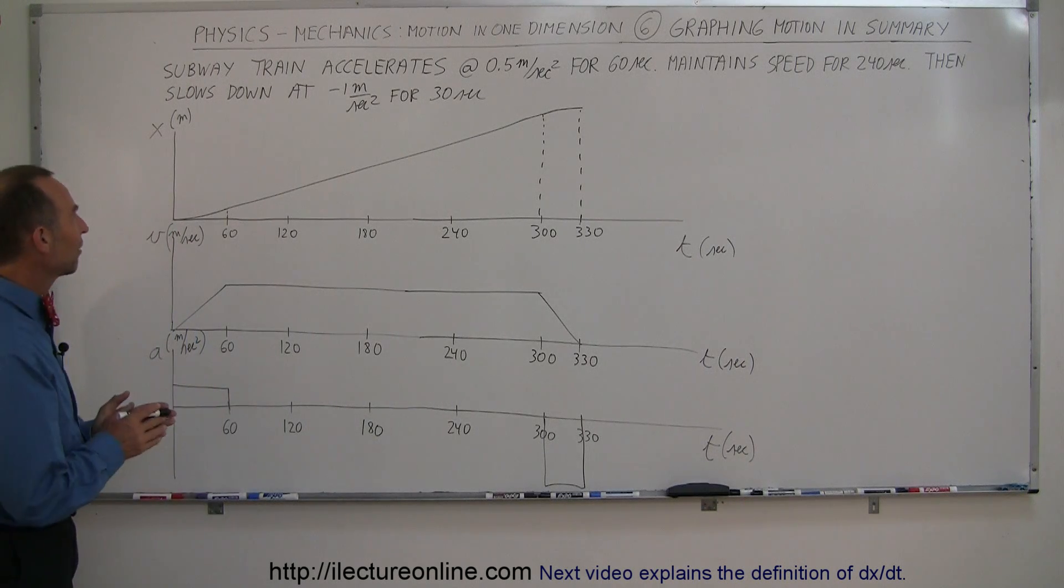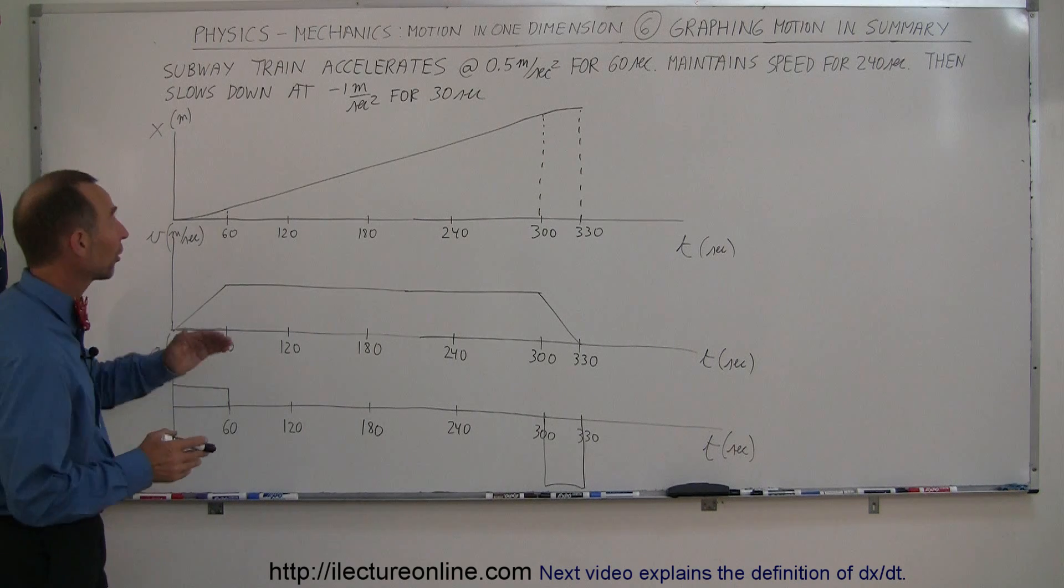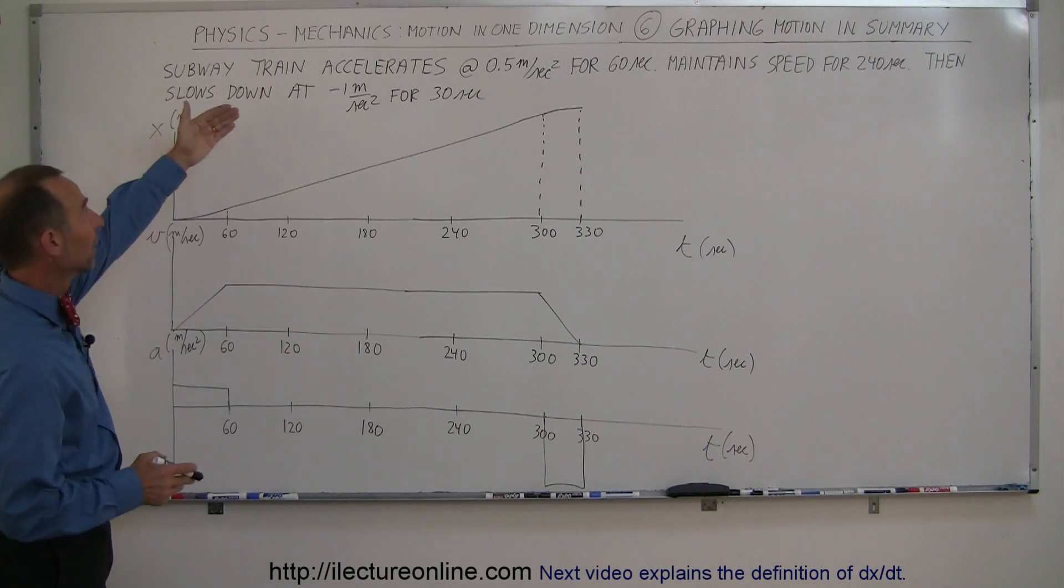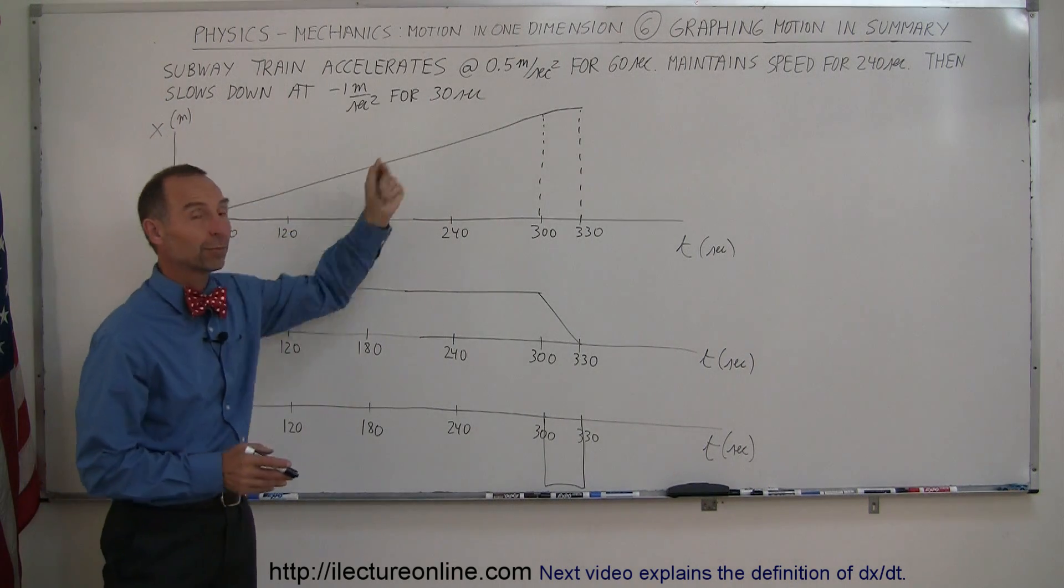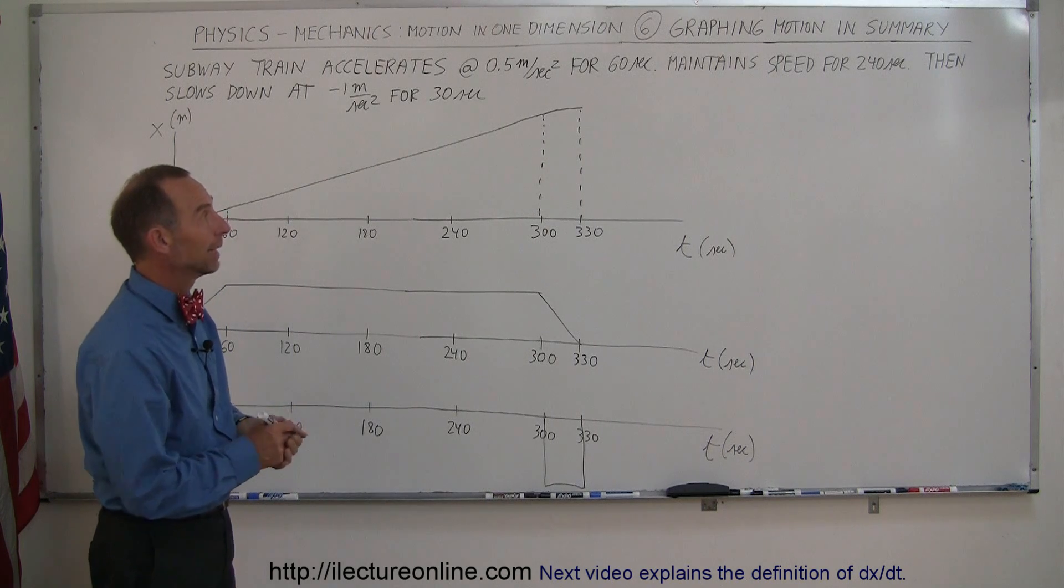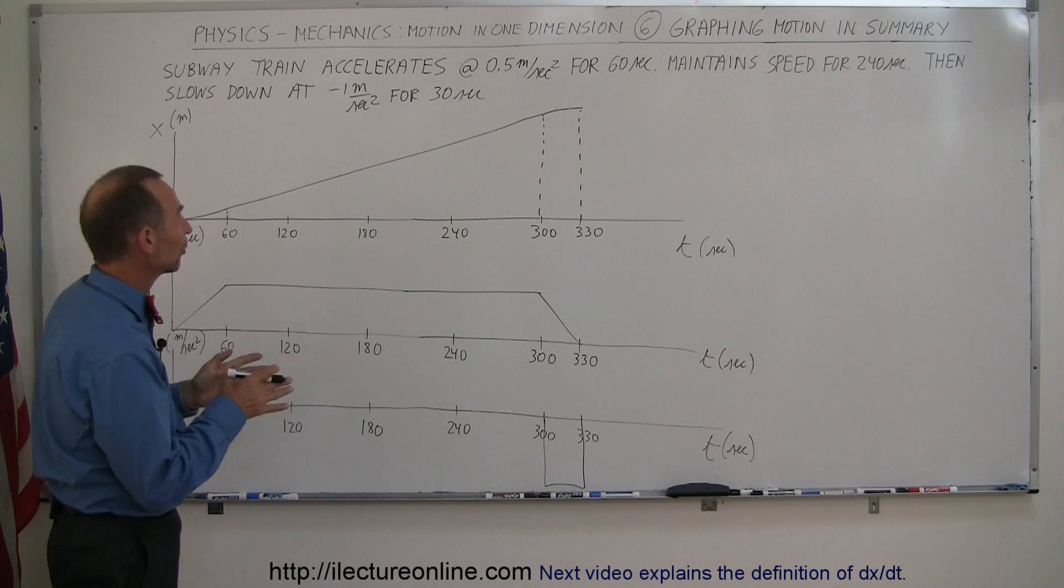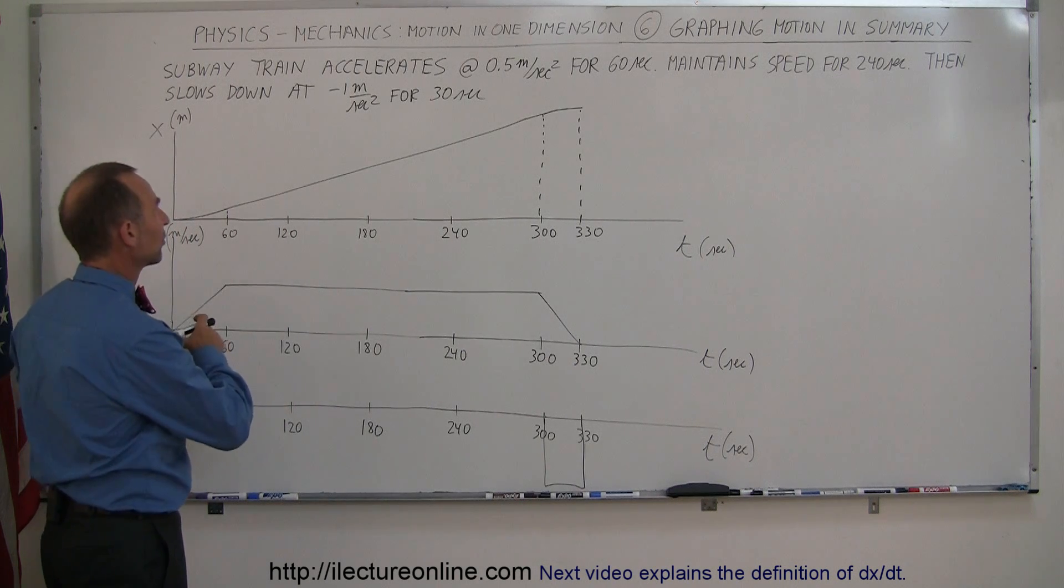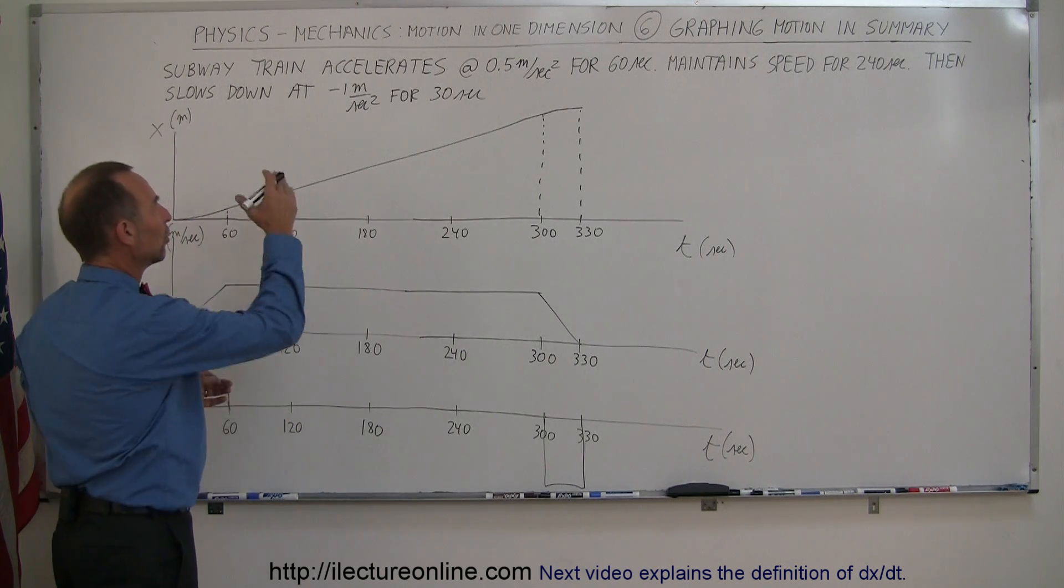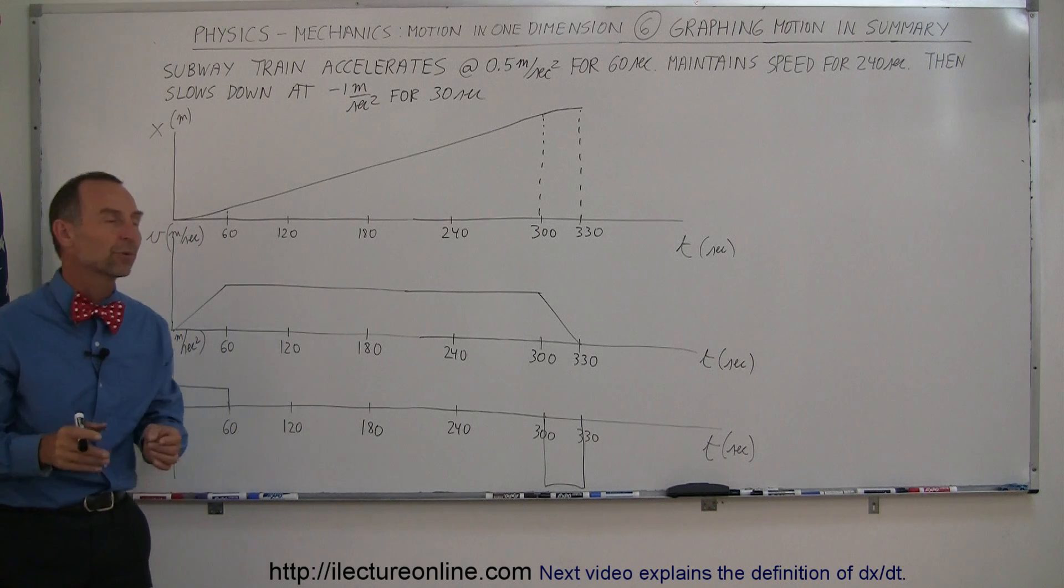To summarize how we graph position, velocity, and acceleration of an object that starts at rest, like a subway train, accelerates for the first 60 seconds at 0.5 meters per second squared, then maintains that speed for 240 seconds, and then slows down the next 30 seconds from 30 meters per second back down to 0 meters per second with an acceleration of minus 1 meter per second squared.